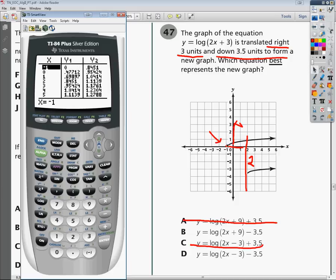My y sub 1, which is my original question, should have a zero at negative 1. And it certainly does. So that's a good thing.